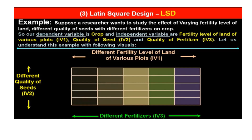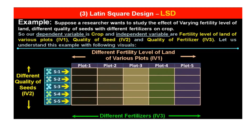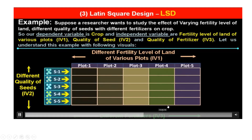Let us understand this example with the following visuals. We have taken different fertility levels of land across five plots: plot 1, plot 2, plot 3, plot 4, and plot 5. We have taken five quality of seeds: seed 1, 2, 3, 4, and 5. And we are using five types of fertilizers: A, B, C, D, and E. These are the independent variables, and we will observe their effect on crop — the dependent variable.